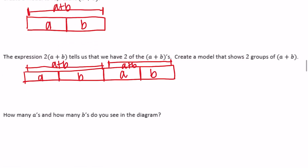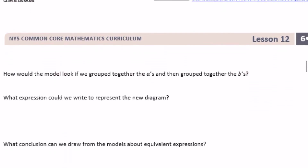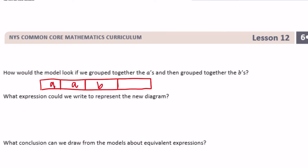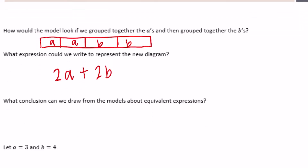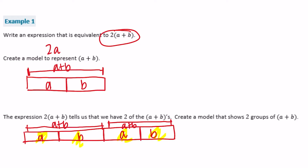How many a's and b's are in the diagram? We see two a's and two b's. If we group the a's together and the b's together — instead of a+b+a+b — we get the two a's together and the two b's together, giving us 2a plus 2b. So the equivalent expression for the new diagram is 2a plus 2b, meaning 2(a+b) equals 2a plus 2b.